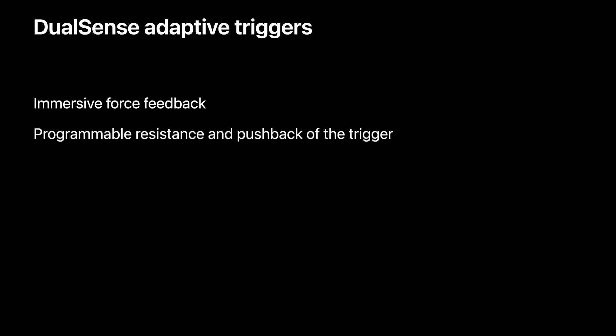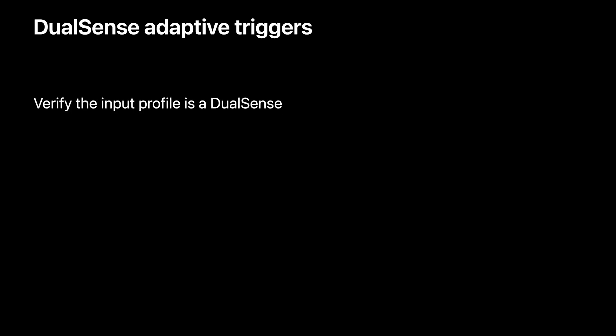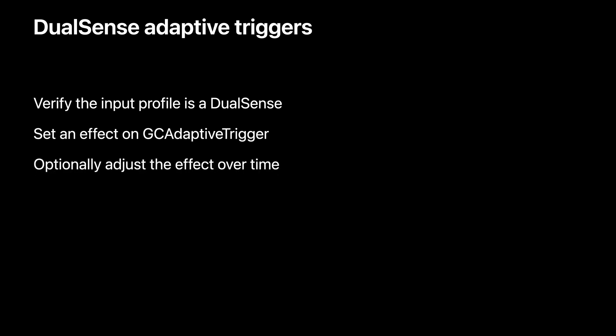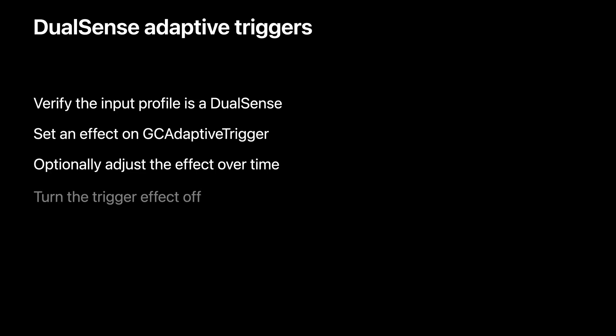The DualSense adaptive triggers allow you to improve game immersion through the use of force feedback. By dynamically applying a varying resistance to the trigger based on what the player is doing, you can emulate the feeling of pulling a bowstring or a slingshot under tension and many more sensations. The way to support adaptive triggers in the game controller framework is straightforward. First, verify that the physical input profile on the player's controller is a DualSense. Then simply set the adaptive trigger effect you're after with a method call. You can continuously read the state of the adaptive triggers and adjust your effect accordingly, and you need to make sure you turn off the adaptive trigger effect when you're done.